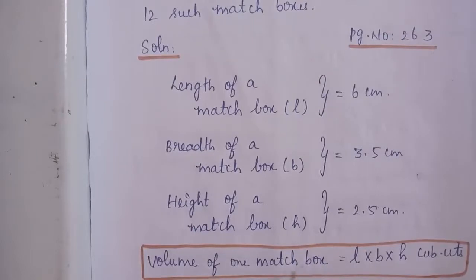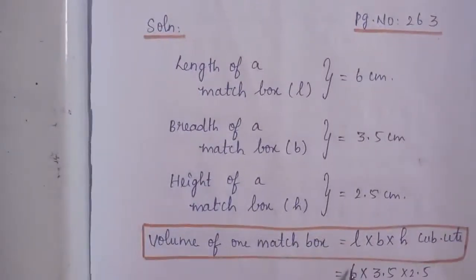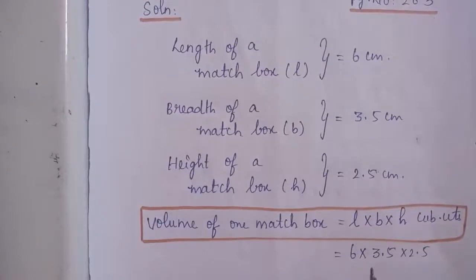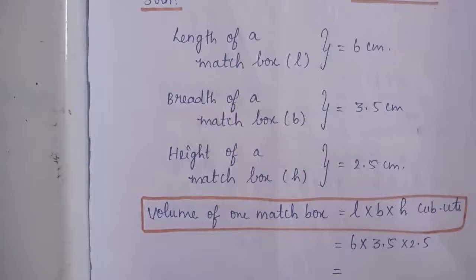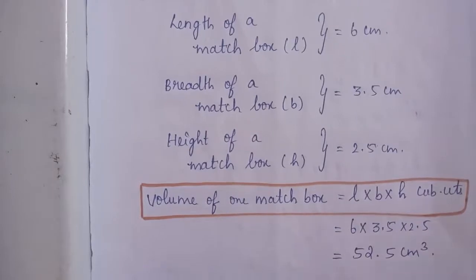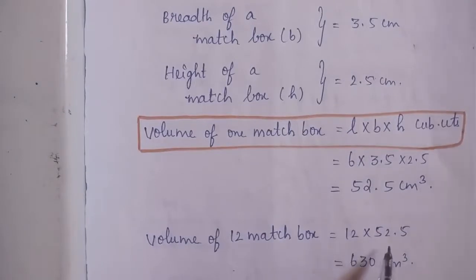Volume of one matchbox: first you find the volume of one matchbox, then find the volume of 12 such matchboxes. Volume is equal to length into breadth into height cubic units, which is equal to 6 into 3.5 into 2.5. A matchbox is in the shape of a cuboid, so we use the cuboid formula. 6 into 3.5 into 2.5 is 52.5 cm cube. Volume of 12 such matchboxes is equal to 12 into 52.5 = 630 cm cube.